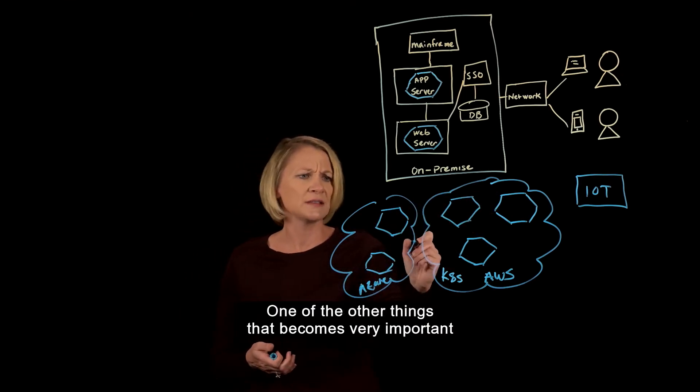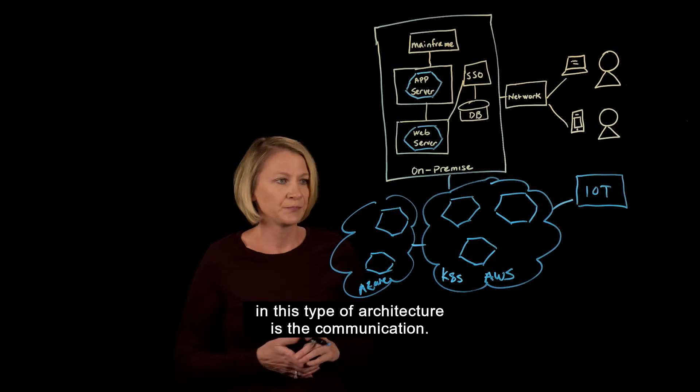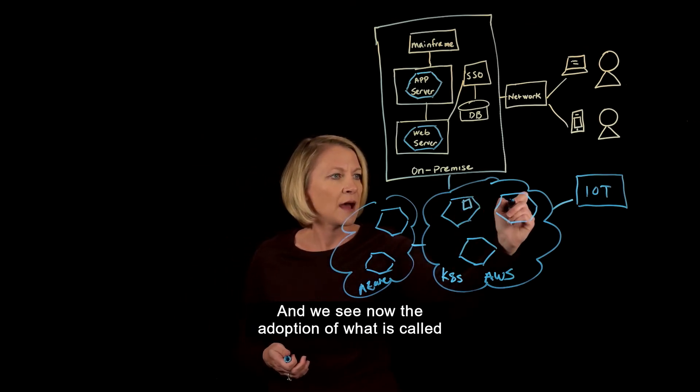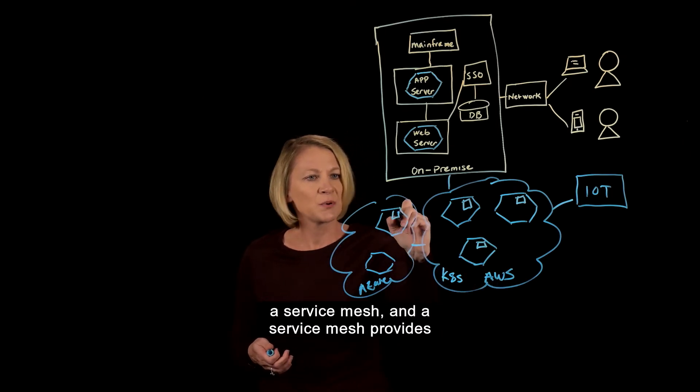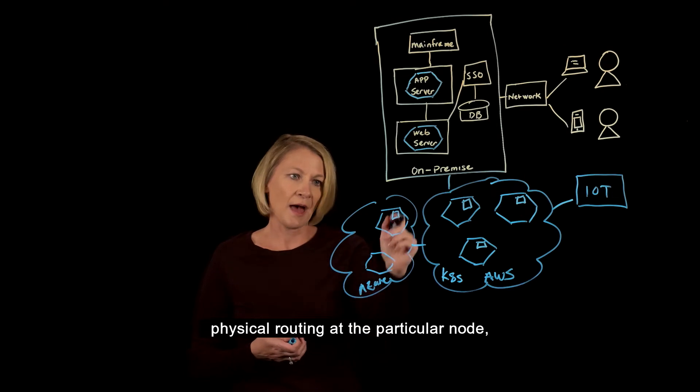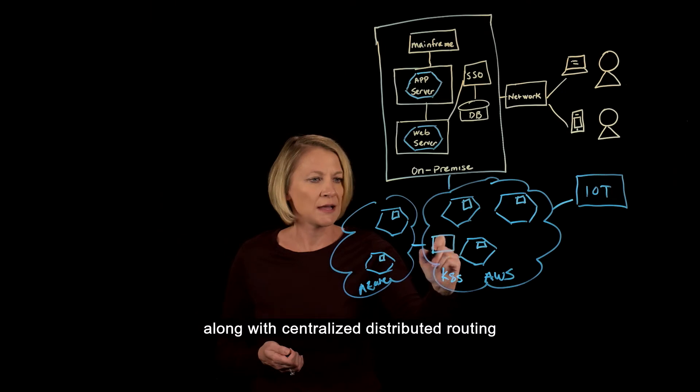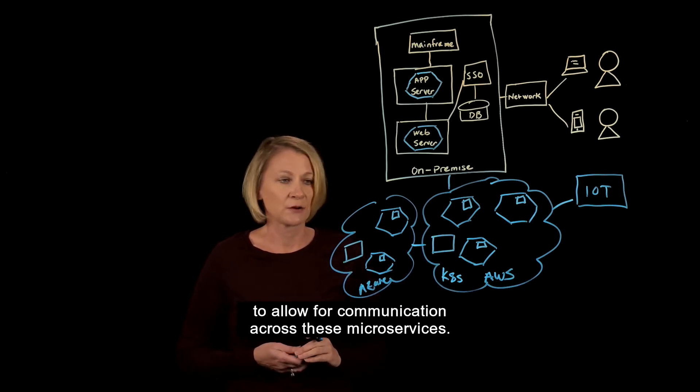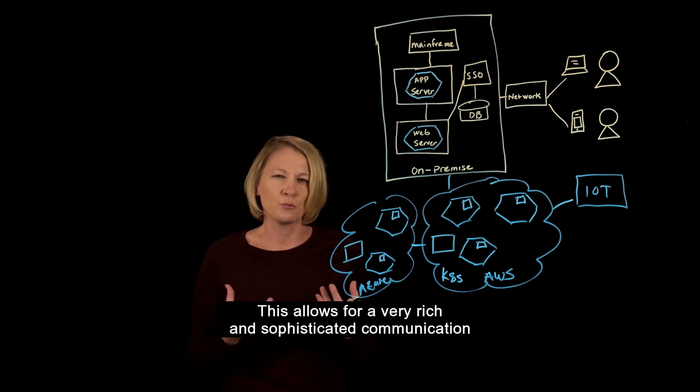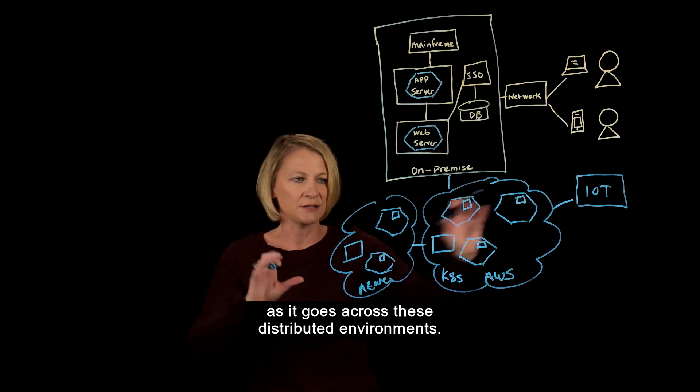One of the other things that becomes very important in this type of architecture is communication, and we see now the adoption of what is called a service mesh. A service mesh provides physical routing at the particular node along with centralized distributed routing to allow for communication across these microservices. This allows for very rich and sophisticated communication and routing as it goes across these distributed environments.